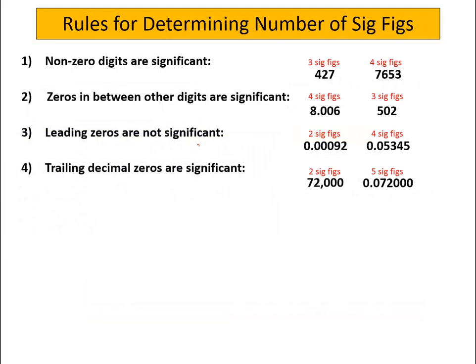Let's talk a little bit about how you determine the number of significant figures in a number. So first, non-zero digits are significant. So in the number 427, it only has three sig figs. But when you have zeros, it gets a little more tricky.